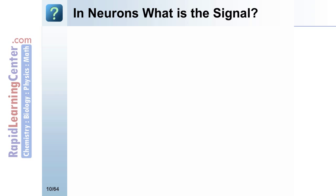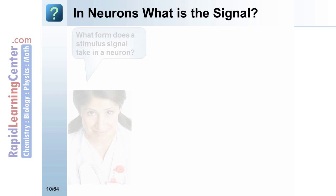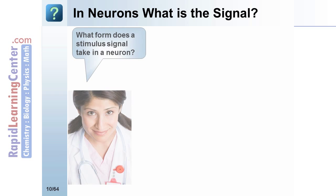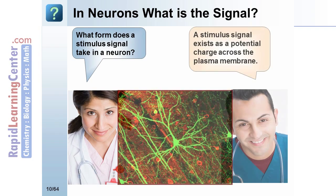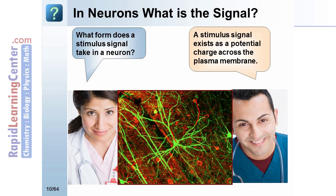In neurons, what form does a stimulus signal take? A stimulus signal exists as a potential charge across the plasma membrane.